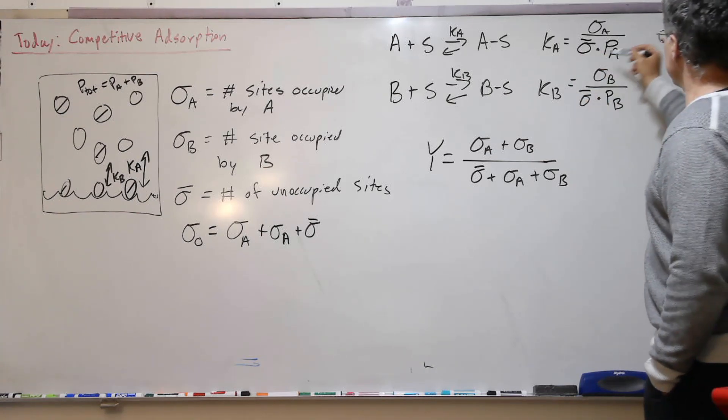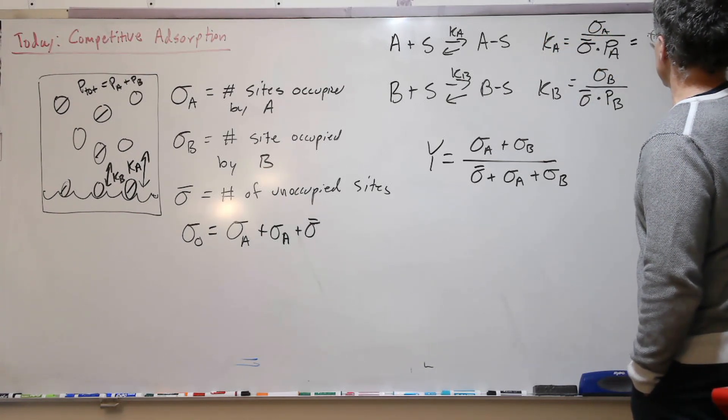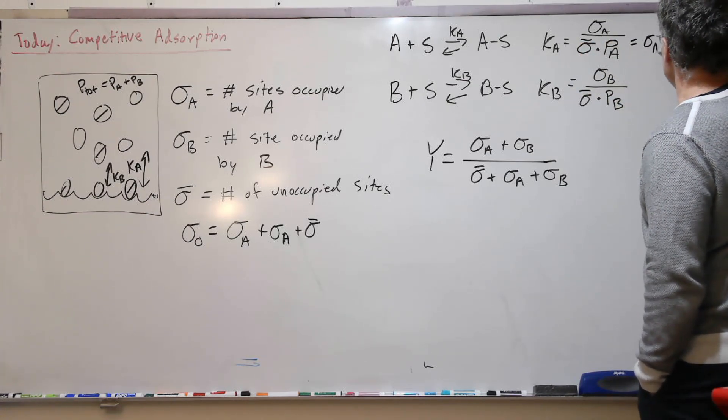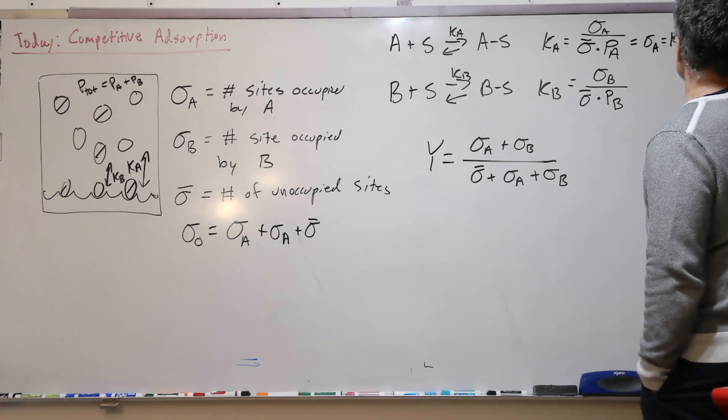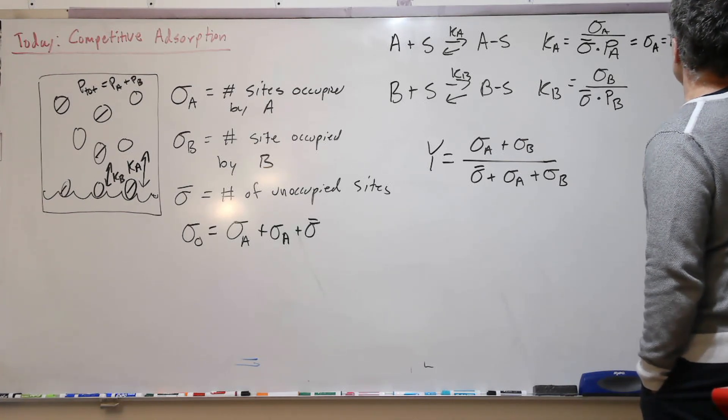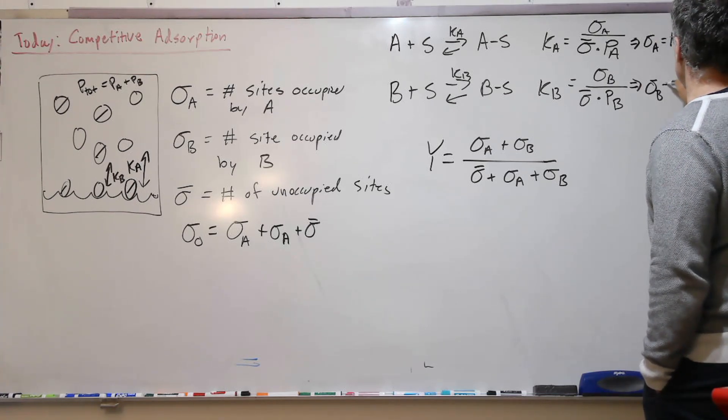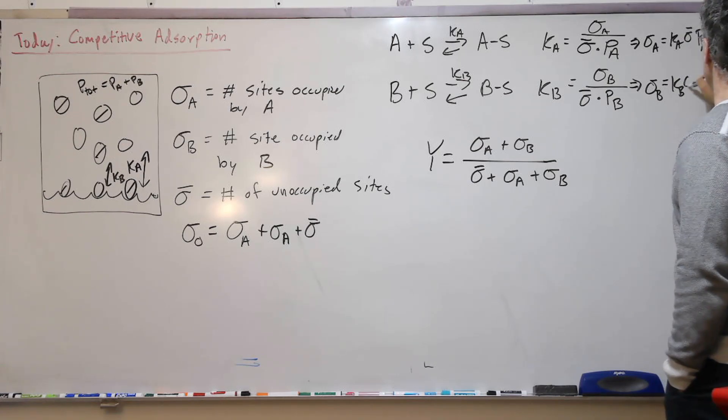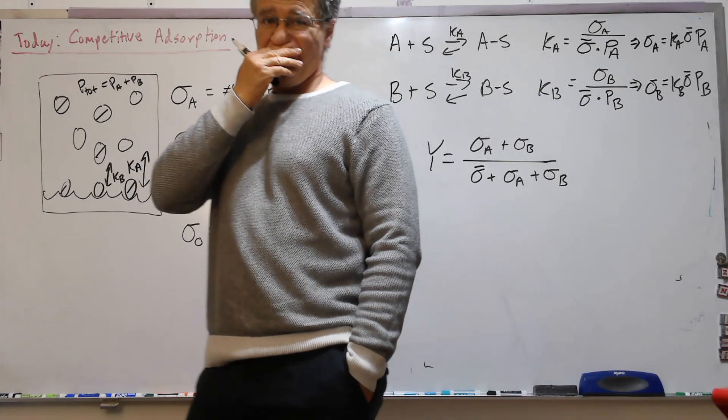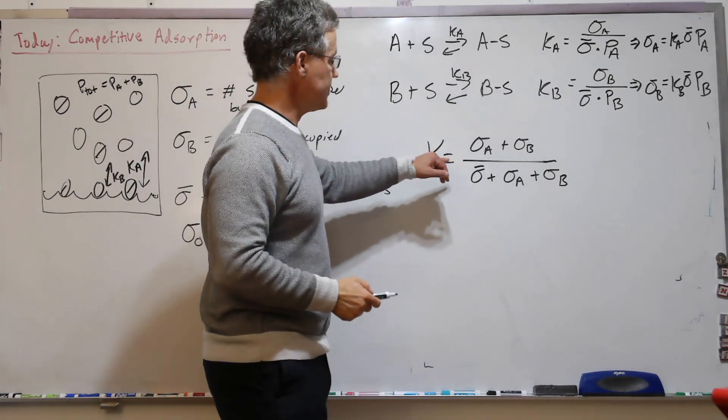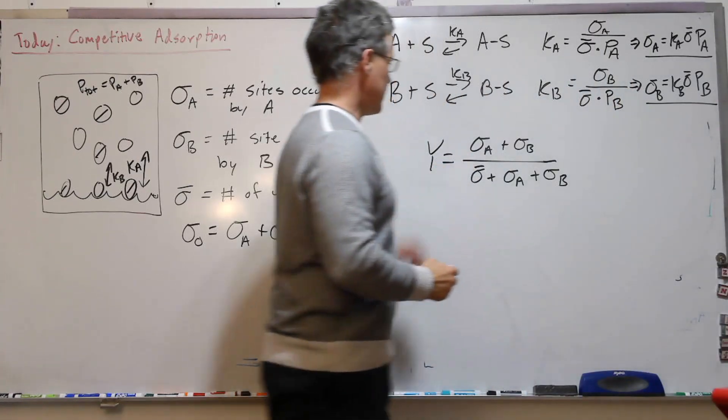Now let's take these, and as we've done in the past for the Langmuir isotherm, let's solve for sigma A and sigma B. Then we can substitute these expressions into our expression for Y.